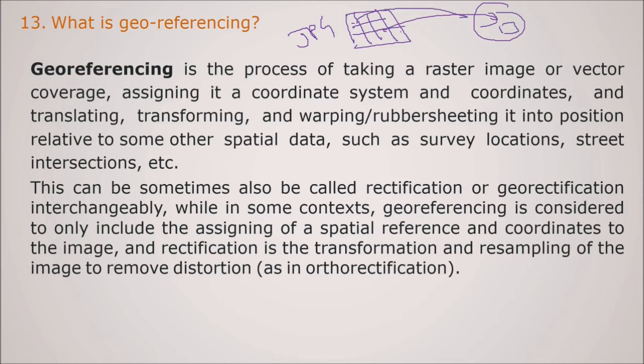So georeferencing is the process of taking a raster image or vector coverage, assigning it with certain coordinate system and coordinates and then translating, transforming and warping or resampling it into position relative to some other spatial data such as survey location, street intersection. This can be sometimes called as rectification also or georectification interchangeably. So georeferencing and rectification are almost similar. While in some contexts, georeferencing is considered to only include the assigning a spatial reference and coordinate to the image. While the rectification is the transformation and resampling of the image to remove the distortion that is orthorectification.